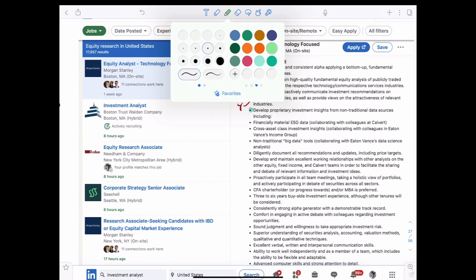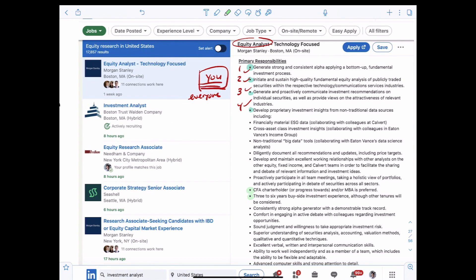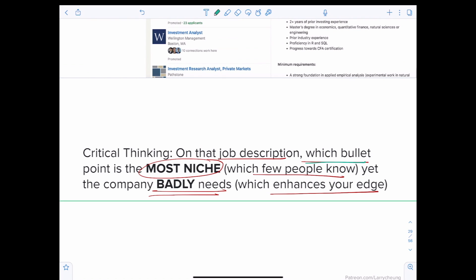Let's take a look at some other filtering mechanisms, such as needing the CFA, needing three to six years of buy side experience. Now that filter is a filter not by niche of skill but by simply credentialing and by experience. If you and I have the CFA and you and I have three to six years of experience, then when it comes to these two bullet points, once again, we are equals. So follow this principle where you are looking for the bullet point that is the most niche, which few people know about, few people are experts in, yet the company badly needs, the company clearly requires, which enhances your edge. In this bullet point, you can see there's a note about ESG data, about cross-asset class investment insights, and big data tools. These three areas, I can almost guarantee that not everybody will be able to have expertise in ESG, not everybody will have expertise in cross-asset class investment insights, not everybody has had exposure before with big data tools. Therein lies the opportunity.